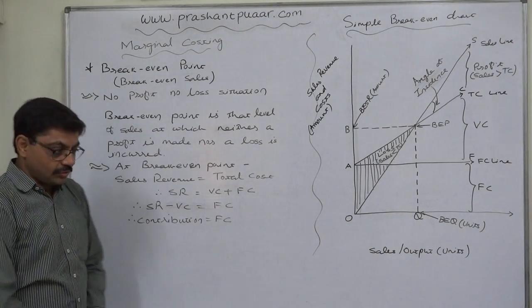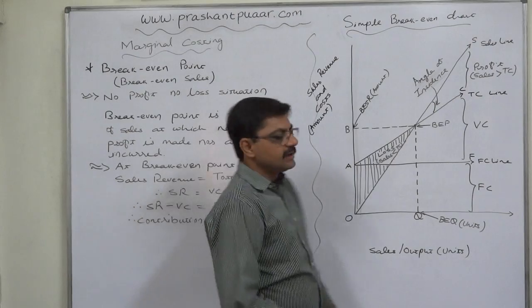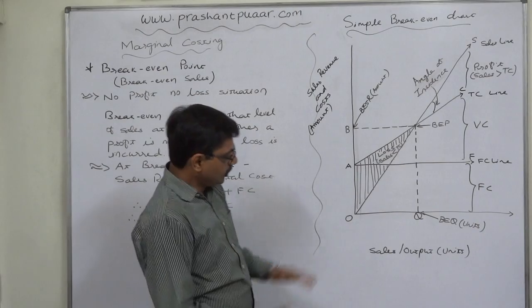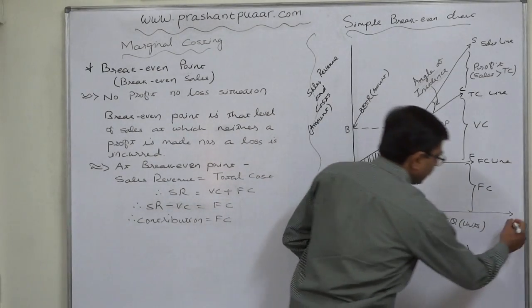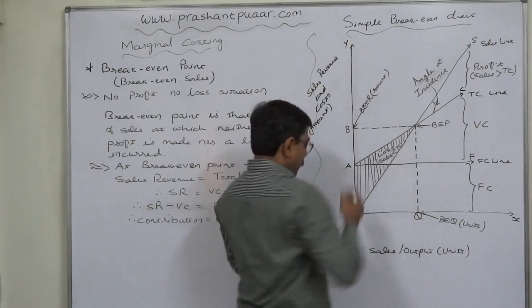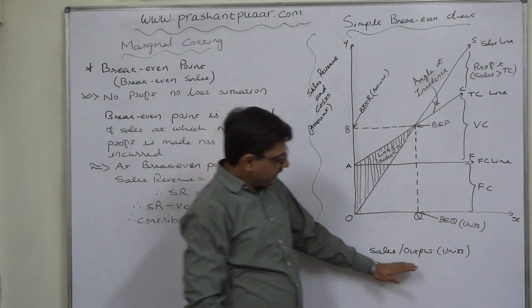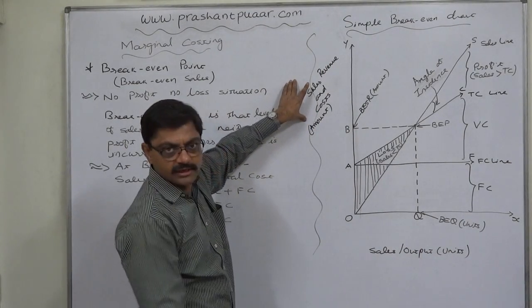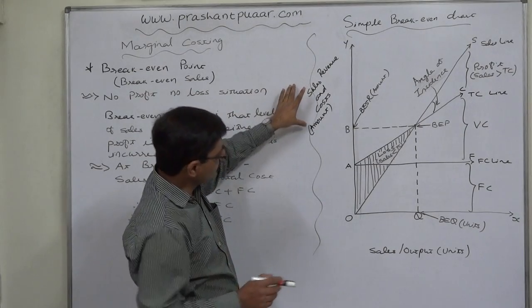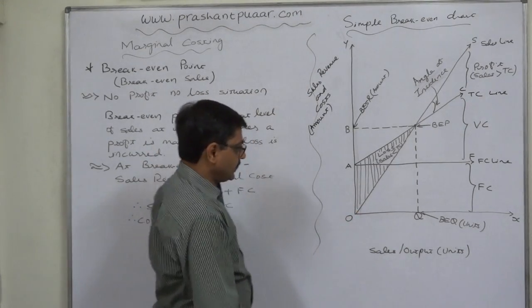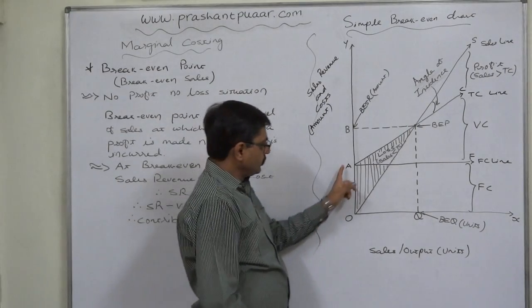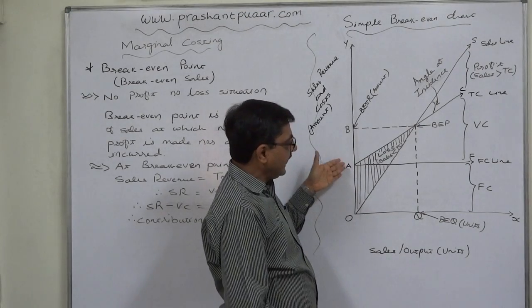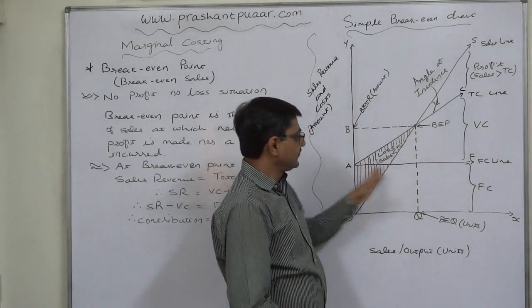Now let us study the simple break-even chart in brief. First, take a graph paper and draw the horizontal axis. On the X or horizontal axis we take sales or output in number of units, and on the vertical axis we take sales revenue and cost — that is, amount — because amounts are dependent on quantity. First, draw a line parallel to the X axis from point A to F; that is our fixed cost line.